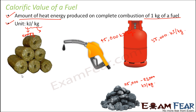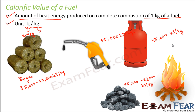Biogas is formed from the remains of dead plants and animals, and it has a calorific value of around 35,000 to 40,000 kilojoules per kg. Wood has a calorific value of 17,000 to 22,000 kilojoules per kg. Comparing all these values, the minimum calorific value is that of wood and the maximum is that of LPG. So the best fuel among these five is LPG and the worst is wood.